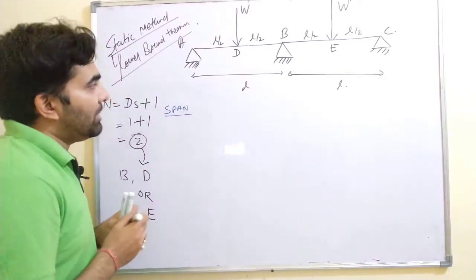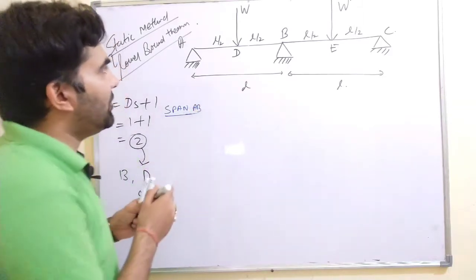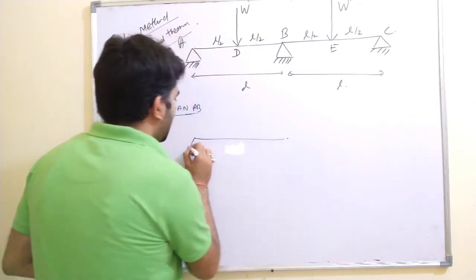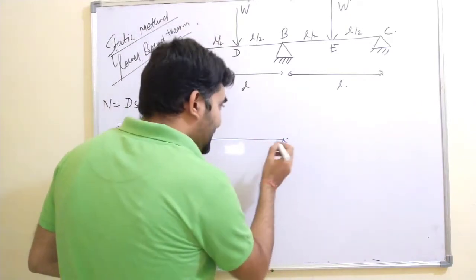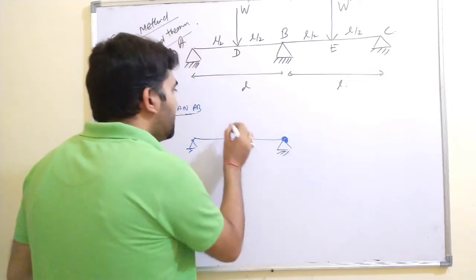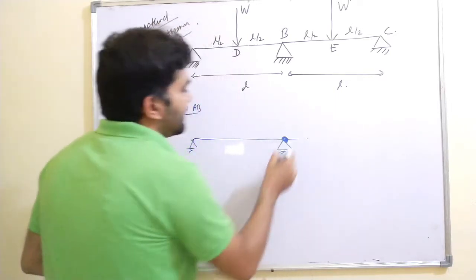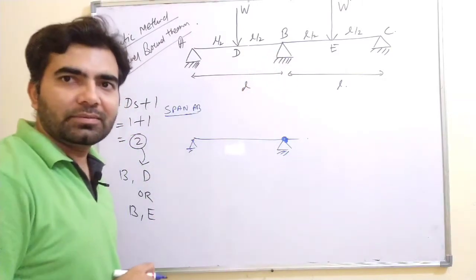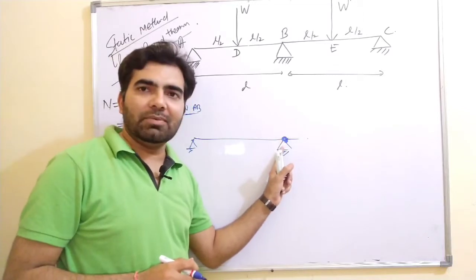By considering span AB separately — if a plastic hinge is developed at point B — then the beam behaves like a simply supported beam at one end and a fixed support at the other end, with a plastic hinge developing at point B.